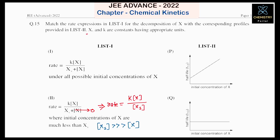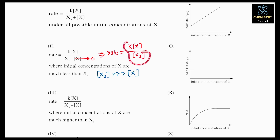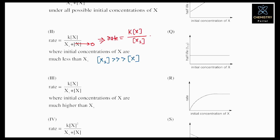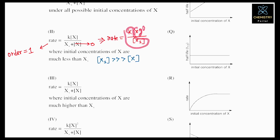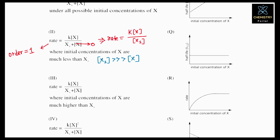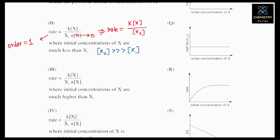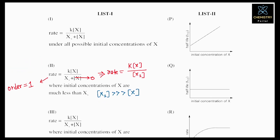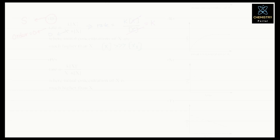Since XS and K are constants, the rate equation becomes rate = (K/XS)·X, which is proportional to X to the power one. This means the reaction is first order — order equals one. For a first order reaction, the graph of ln X versus time t is a straight line going downward. So the second expression matches graph S.